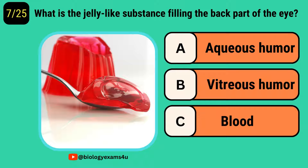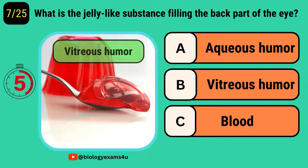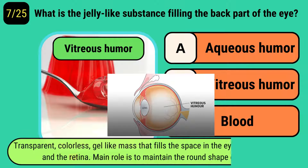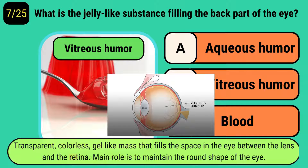What is the jelly-like substance filling the back of the eye? It is called the vitreous humor. It is a transparent, colorless, gel-like substance that fills the space in the eye between the lens and the retina. Its main function is to maintain the round shape of the eye.